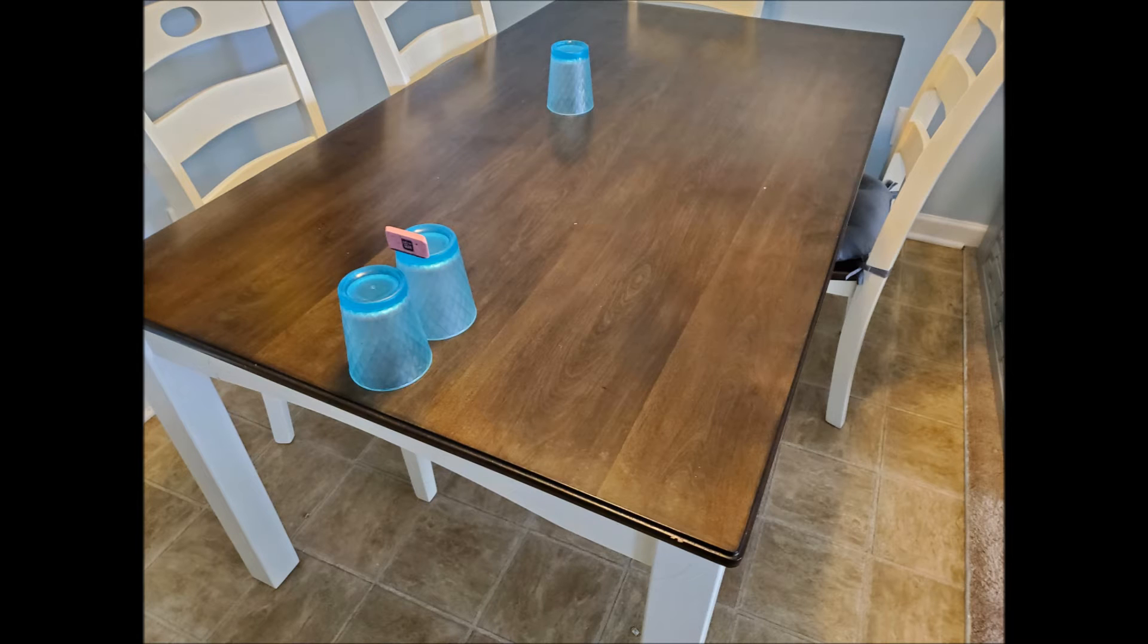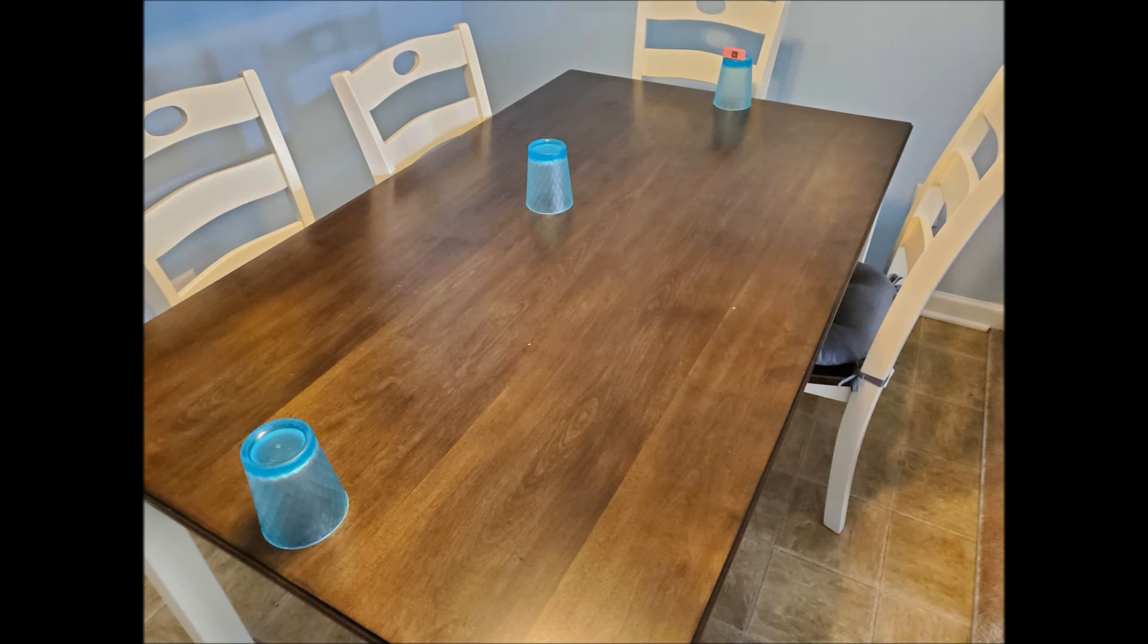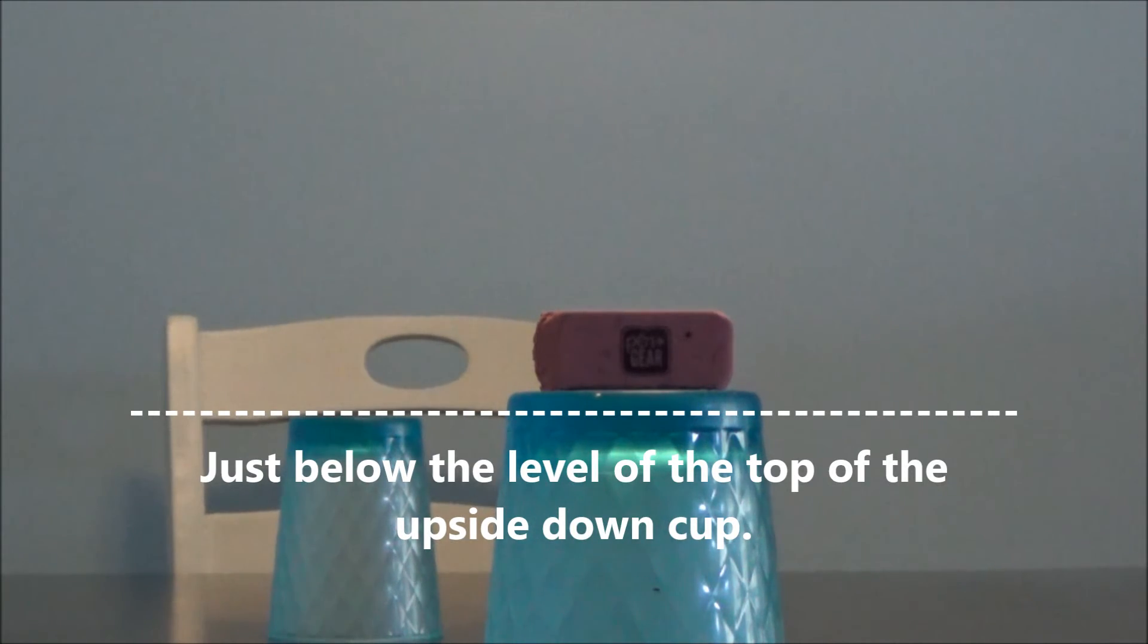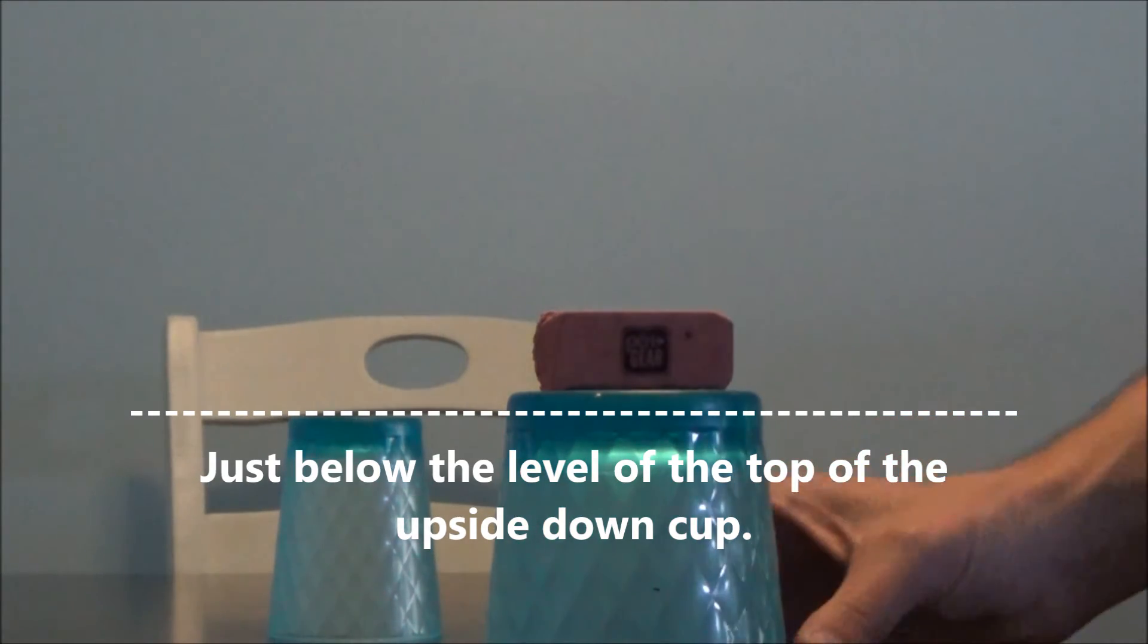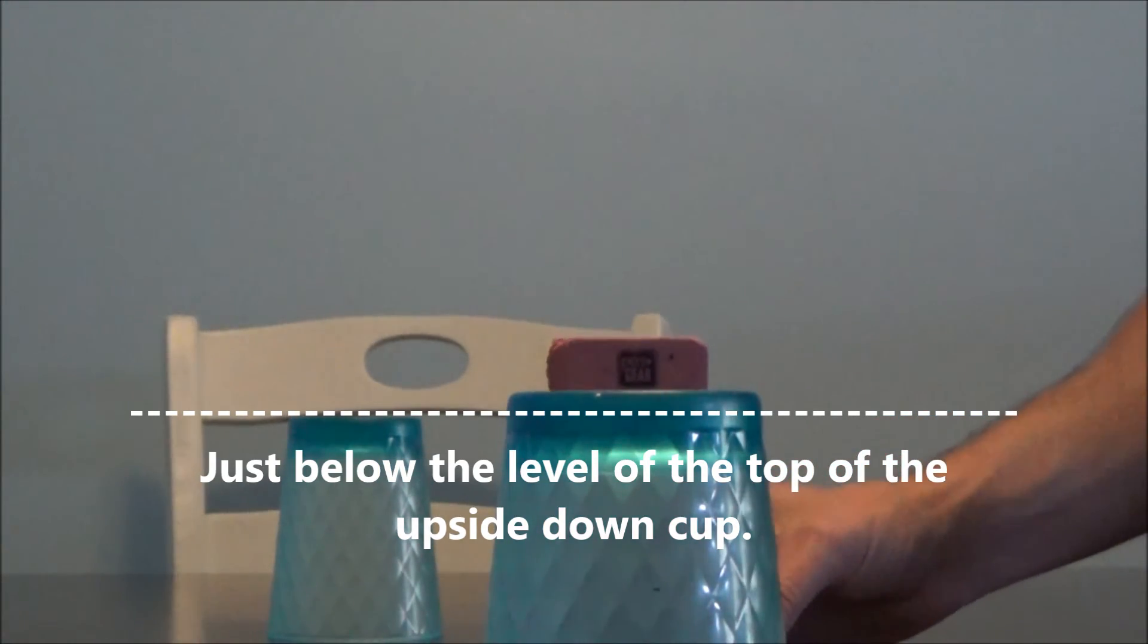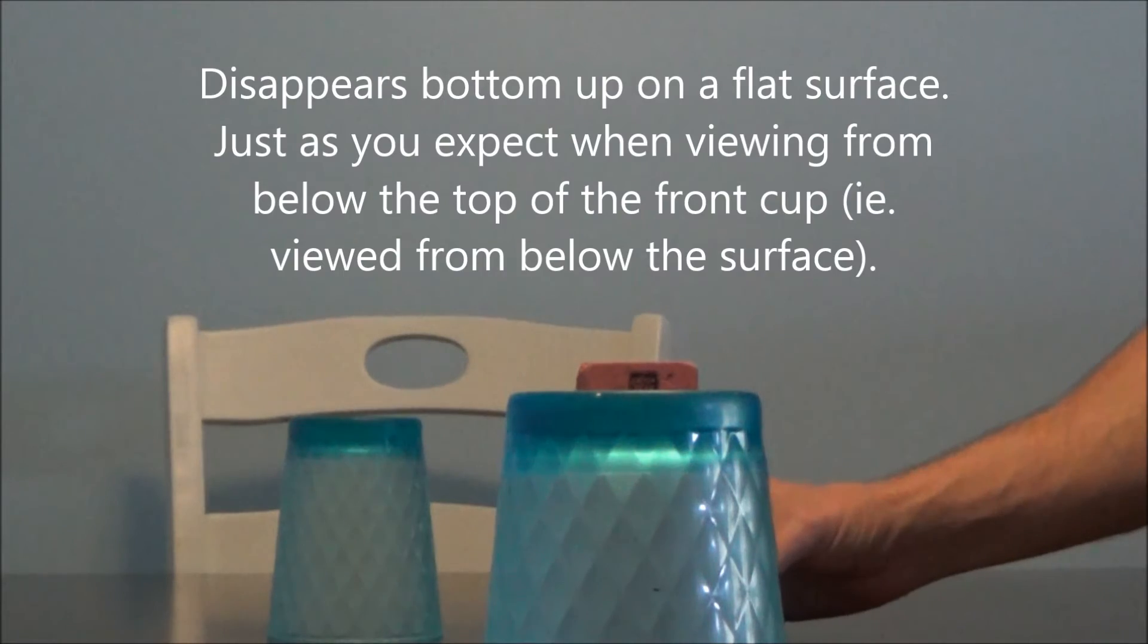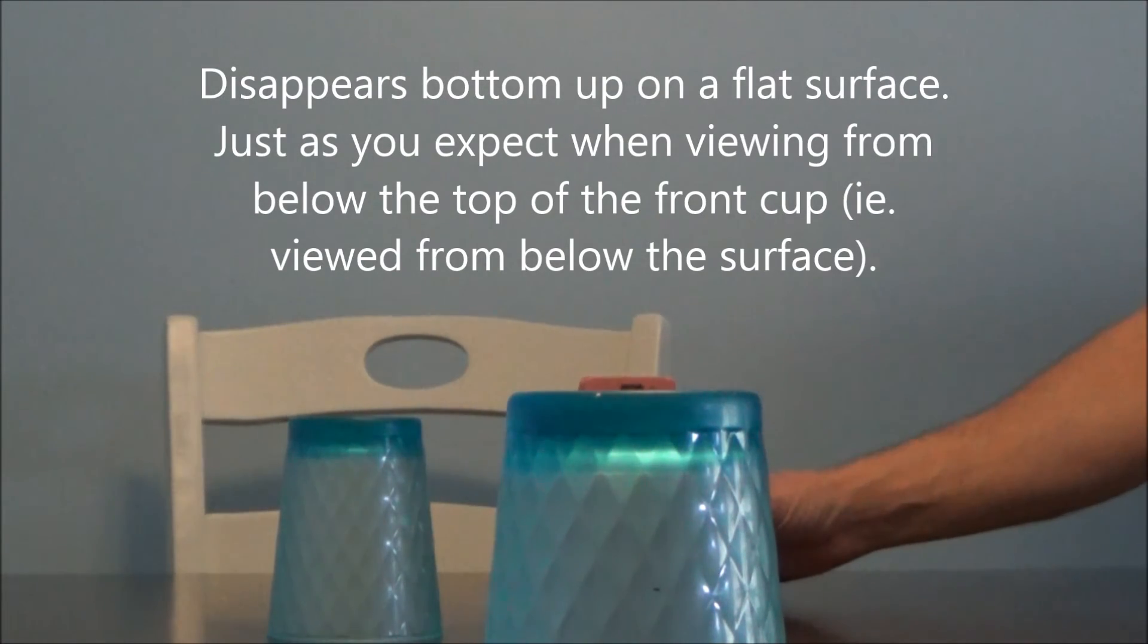Here's another view of the setup before we move the cup with the eraser on it, and this will show you where the cup is at the end of the experiment. This is taken just below the level of the top of the upside-down cup. As you can see, the eraser is starting to disappear, matches perfectly when an object moves away and when viewing from below the surface.